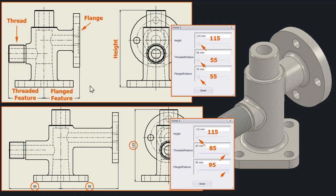Here is the starting situation from the part with the dimensions in the mentioned tutorial. And here we changed this length left and this length right. This is a thread - we call it threaded feature - this dimension. And the other is flanged feature because here is a flange. The height is not changed. But the other from 55 to 85 is the left length and from 55 to 95 is the right length.